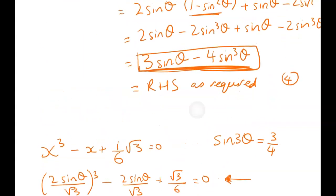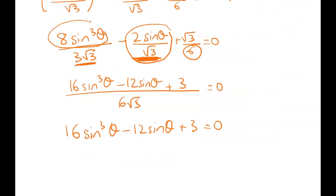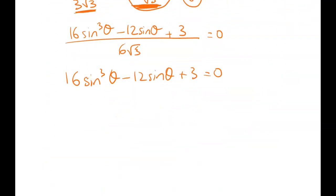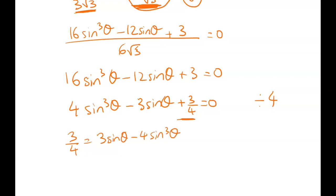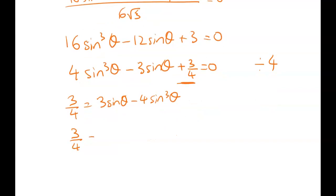Looking back up here I want to end up with this expression equaling something. So I'm going to divide both sides through by four. That gives me four sine cubed theta minus three sine theta plus three over four is equal to zero. I'm going to leave this here and I'll get three quarters is equal to three sine theta minus four sine cubed theta. So we have three quarters is equal to sine of three theta.